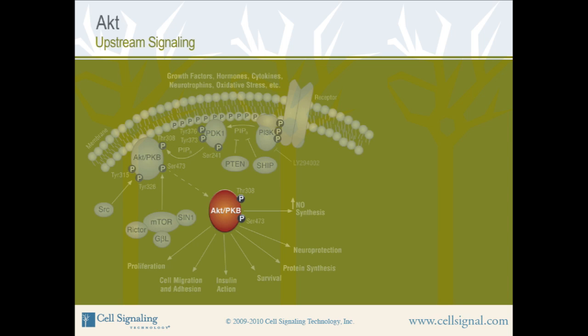B-cell receptors and integrin receptors also signal to AKT via a protein kinase called PI3 kinase, and affect the phosphorylation state of numerous downstream targets.